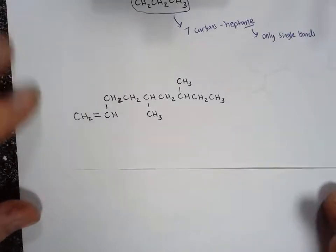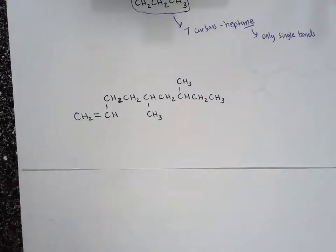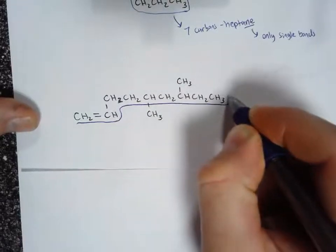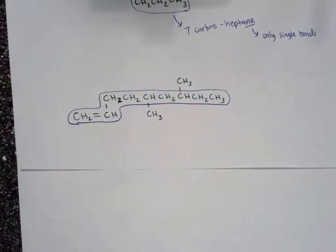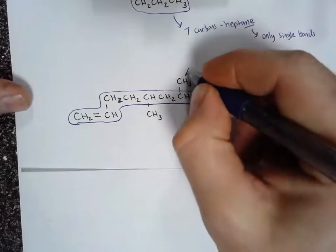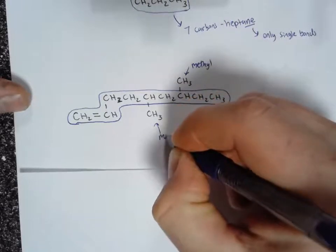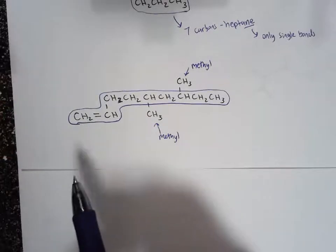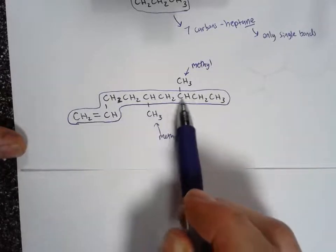This next one has an alkene in it right here. So right off the bat I know that my suffix for the parent chain is going to be "-ene," not "-ane" as we saw for the last one. Finding the parent chain for this one is pretty easy — there's not a whole lot of ambiguity about which direction to go. That would be the parent chain, leaving behind two substituents — this is a methyl and this is a methyl. Numbering, I'm going to start from the side that's closest to the alkene. So one, two, three, four, five, six, seven, eight, nine.